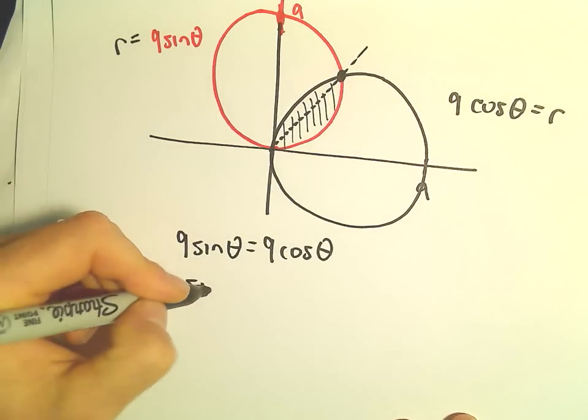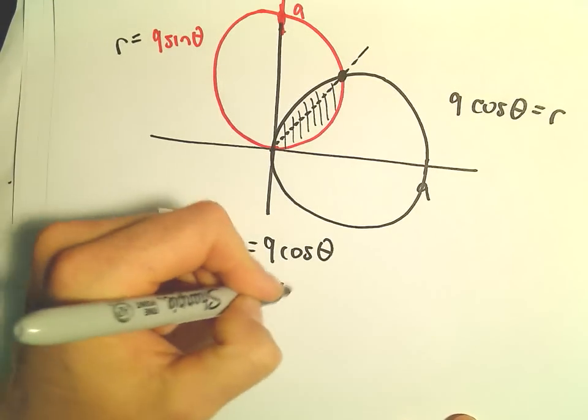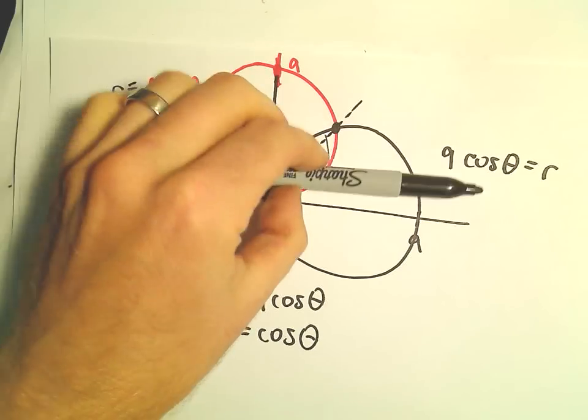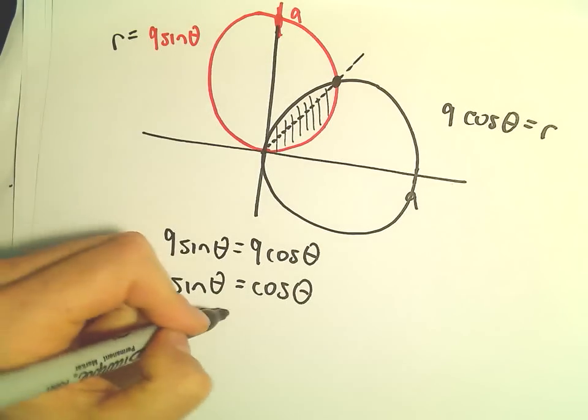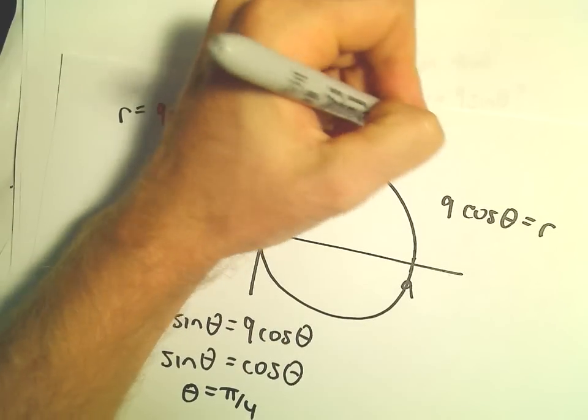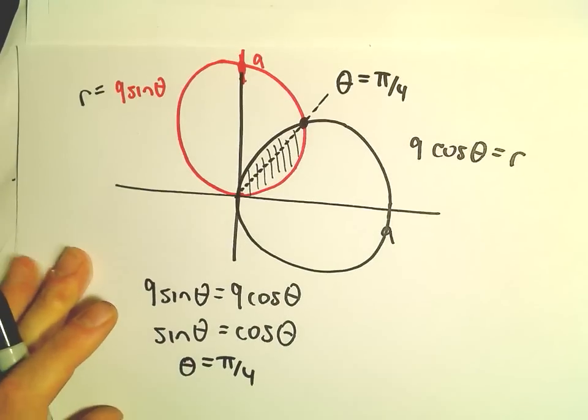That's the same thing as saying sine theta has to equal cosine theta. The angle in the first quadrant where this would happen would correspond to theta equals pi over 4. So this is going to correspond to theta equals pi over 4.